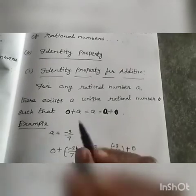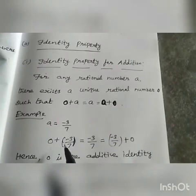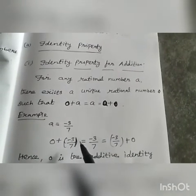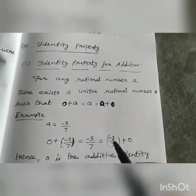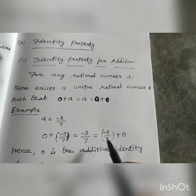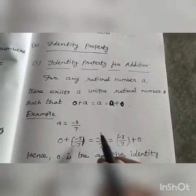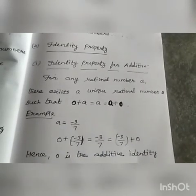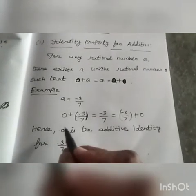So now we add: 0 + (-3/7) = ? We add 0, so the answer is -3/7 only. Zero has no value, so equal to A + 0. The value of A is -3/7, so -3/7 + 0 gives us -3/7 only. Hence 0 is the additive identity for -3/7.